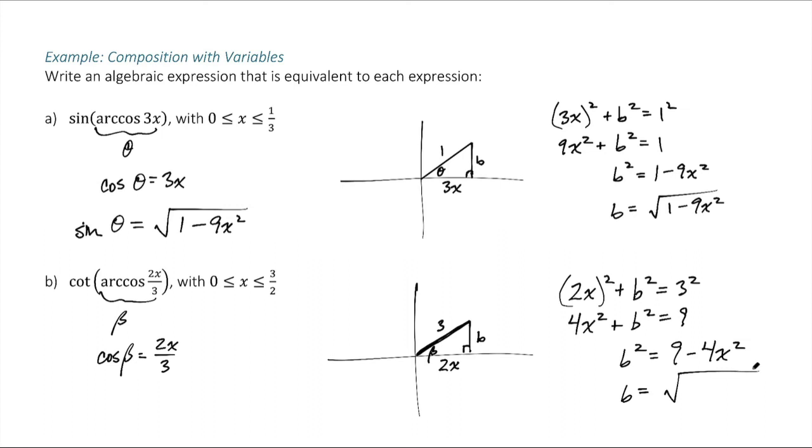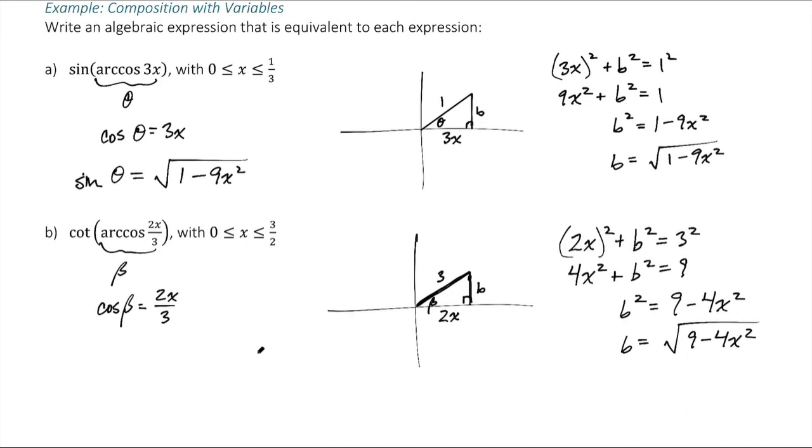And then take the square root. And again, when we do a square root, we get a plus or a minus. We pick which one based on what quadrant we're in. And in this first quadrant, this b value is going to have to be positive. So it's the positive square root of 9 minus 4x squared.